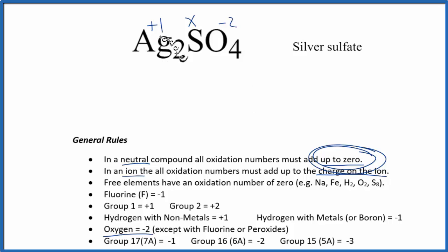So we can just set an equation up. We could say we have two silver atoms, each one is plus one, plus we don't know the sulfur, plus we have four oxygen atoms, and each one is minus two. So all that has to equal our zero right here. And now it's just an equation we could solve for X.